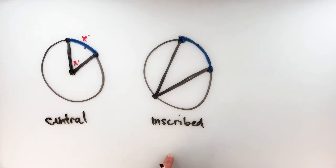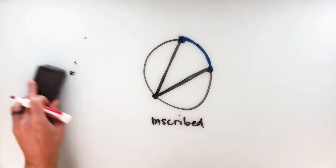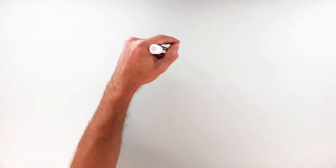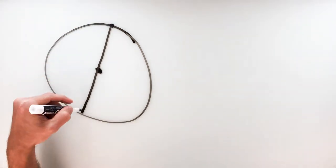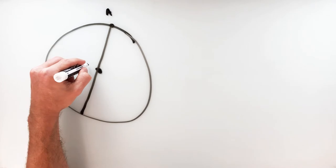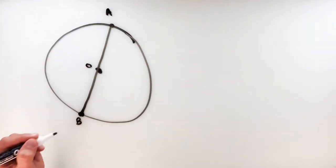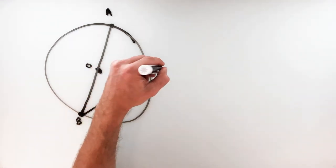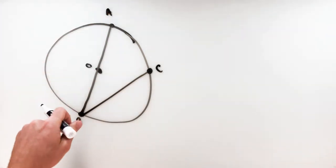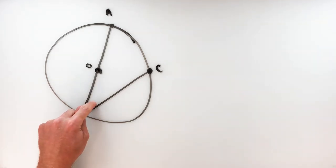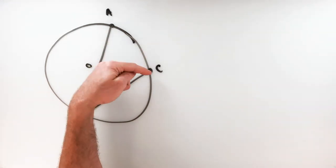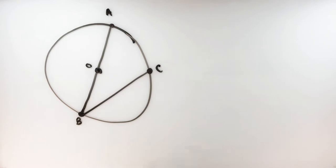Now does that also hold true for inscribed angles? Not quite, but we do find there to be a pretty nice little relationship between them. Let's start off with a big circle. We'll place an inscribed angle where one of the segments goes through the center. We've got point A, the center of the circle is O, point B down here is the vertex of our inscribed angle, and then point C. So angle ABC is the inscribed angle and the center of the circle is point O. We're trying to relate the measure of inscribed angle ABC to the measure of intercepted arc AC.